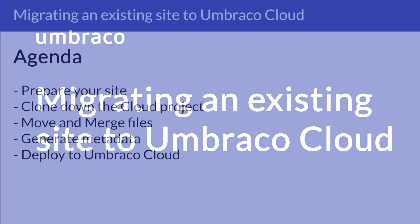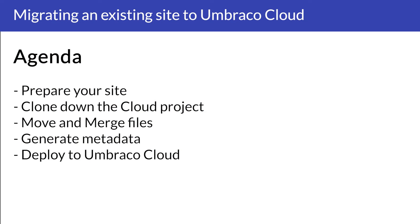Before we get started, let's have a quick look at what we're going to go through in this tutorial. First off, we're going to prepare our site for migration. We're going to clone down an empty Umbraco Cloud project. Then we're going to move and merge the files between the two projects. We're going to then generate the metadata for our Umbraco Cloud project, and then we're going to deploy our project to Umbraco Cloud.